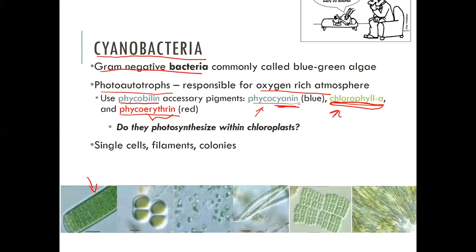Do cyanobacteria use chloroplasts for photosynthesis like plants do? No — cyanobacteria fall under domain Bacteria, which are prokaryotes, and by definition prokaryotes do not have membrane-bound organelles, including chloroplasts. So the photopigments are housed in the plasma membrane of the cell rather than in a chloroplast.